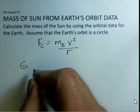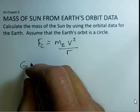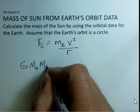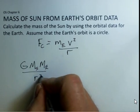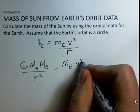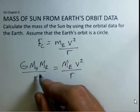We calculate that with the universal constant of gravity, capital G, mass of the Sun, mass of the Earth, and divide by R squared. That gives us the centripetal force from gravity.